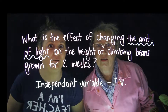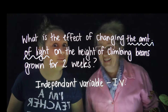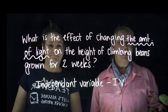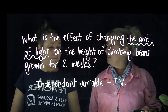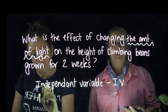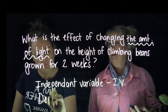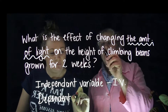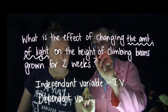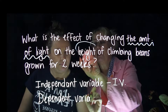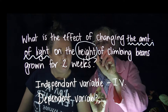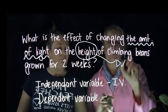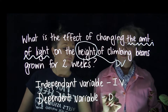The next thing we need is a dependent variable, because we need to measure something. The thing that we measure here is the height — that is our dependent variable, or DV.